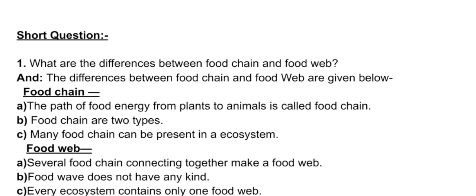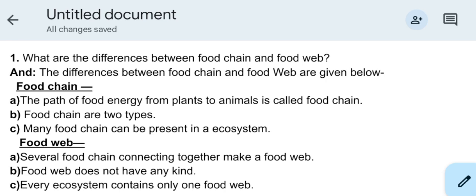Short question one: what are the differences between food chain and food web? The differences are: Food chain — (a) the path of food energy from plants to animals is called a food chain; (b) food chains are of two types; (c) many food chains can be present in an ecosystem. Food web — (a) several food chains connecting together make a food web; (b) a food web does not have any kind of type; (c) every ecosystem contains only one food web.